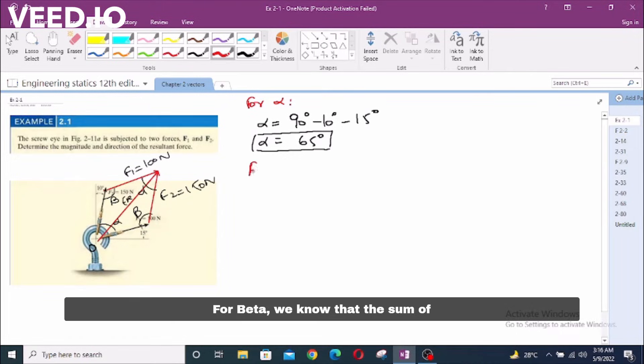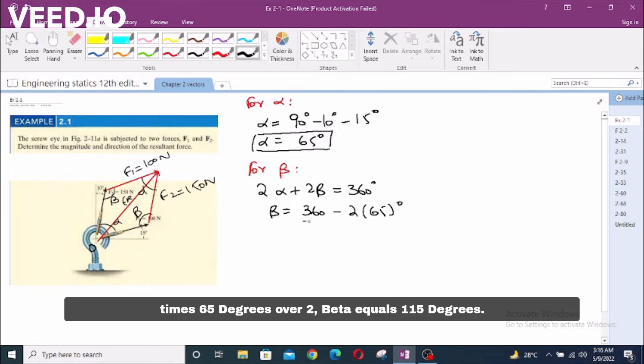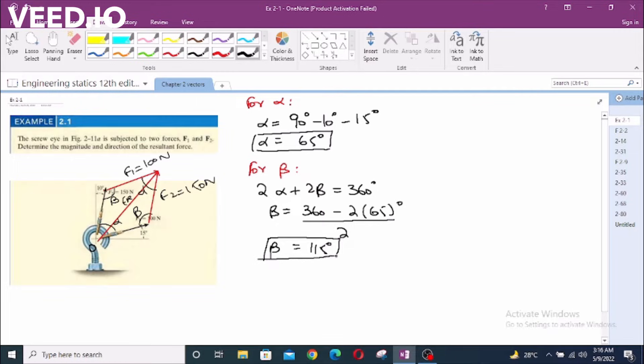For beta, we know that the sum of interior angles of a quadrilateral are 360 degrees. We have 2 alpha plus 2 beta equals 360 degrees. Now beta is equal to 360 degrees minus 2 times 65 degrees over 2. Beta equals 115 degrees.